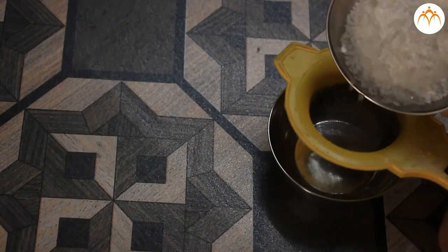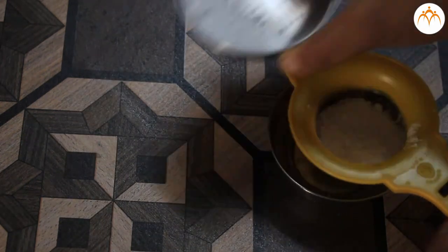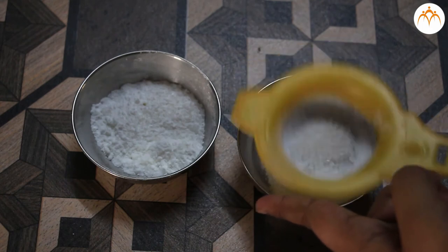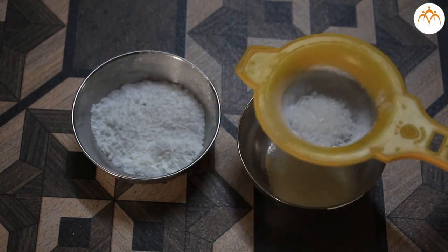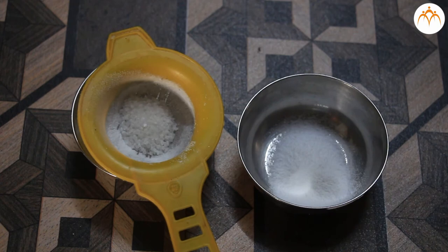Sometimes we can separate things based on the differences in their sizes. For example, here we can separate sugar from powdered sugar using a sieve.